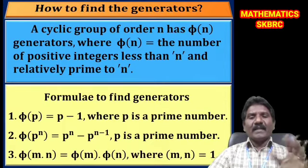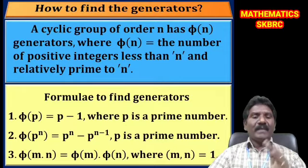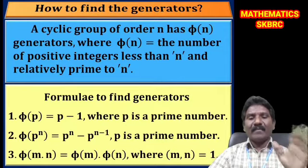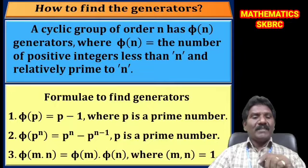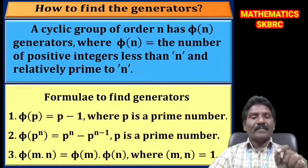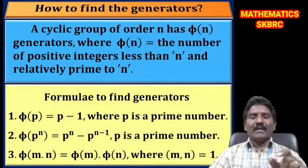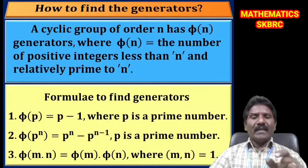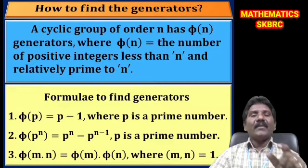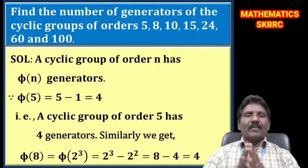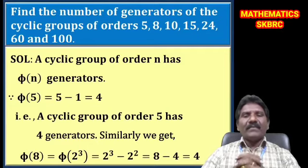Formulas to find the generators: φ(p) = p − 1, where p is a prime number. φ(p^n) = p^n − p^(n−1), where p is a prime number. φ(mn) = φ(m)·φ(n), where GCD(m, n) = 1, meaning m and n are relatively prime (co-prime) numbers.